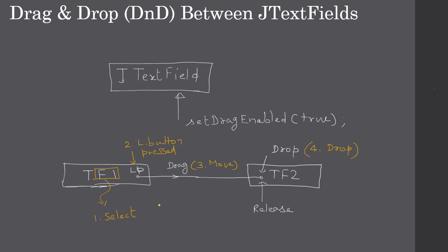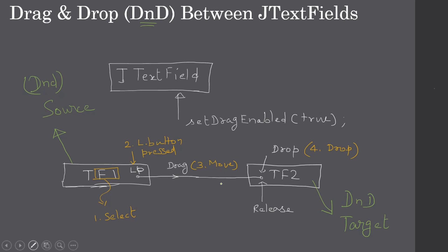This whole operation is called drag and drop, also known as DnD — DnD stands for drag and drop. This first field is called the DnD source and the second will be the DnD target. Whatever text you select in the source will get dropped at the target. Windows users may have used this multiple times when copying and moving files using drag and drop in Windows Explorer.